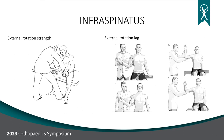For the infraspinatus, which is responsible for external rotation, you test strength in external rotation. You can also test for a lag by placing the patient's arm out to the side — if it starts to droop back toward center, the infraspinatus is no longer competent. The hornblower sign: if you lift their arm up in that position and their teres minor is compromised, their arm will also drop back down.